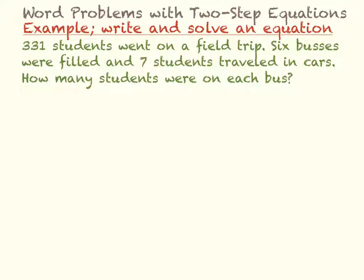So this first example we have 331 students went on a field trip. Six buses were filled and seven students had to travel in cars. So in addition to the six buses we had seven more students that were in cars. How many students were on each bus?